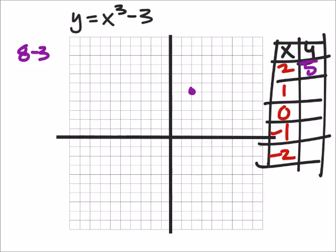And if x is 1, then I have 1 cubed, which is 1 minus 3, giving us a negative 2 when x is 1.